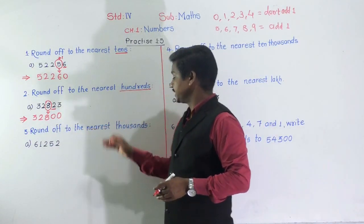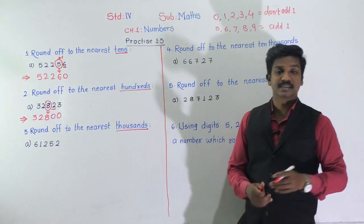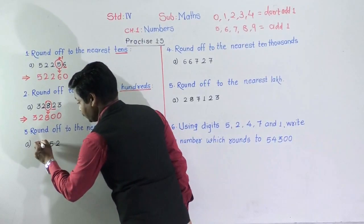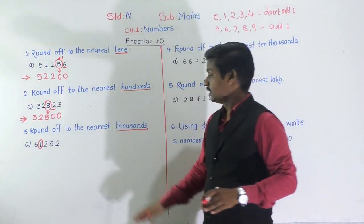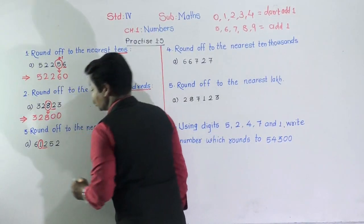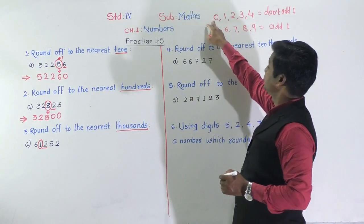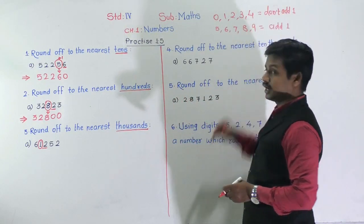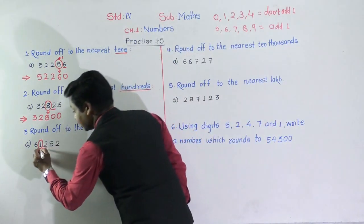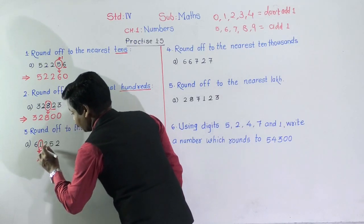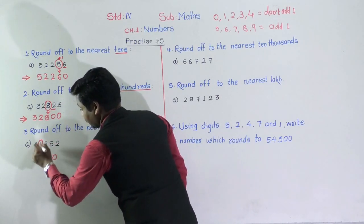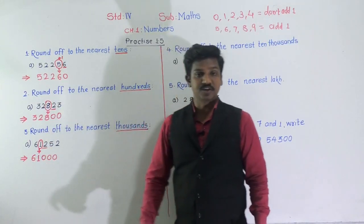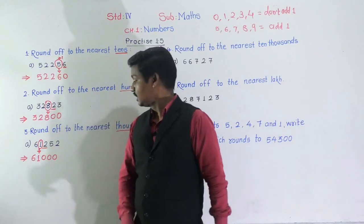Question 3: round off to the nearest thousands. Here we need to find the thousands place digit. Ones, tens, hundreds, and thousands — underline the thousands place digit, then see its next digit, which is 2. Since 2 is the next digit, it comes in our first rule. If 0, 1, 2, 3, or 4 is there as the next digit, we do not add 1 — take the number as it is. For the next three digits, put three zeros, and take the digit before as it is.